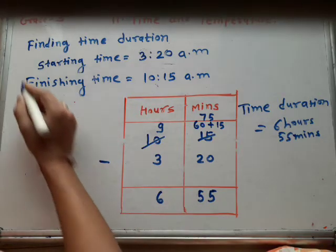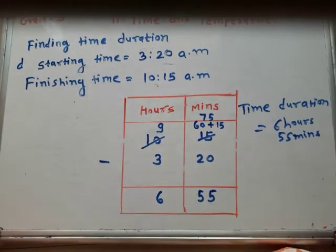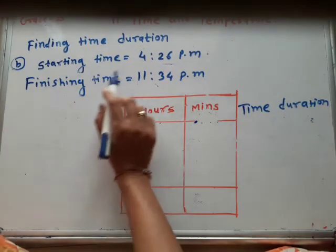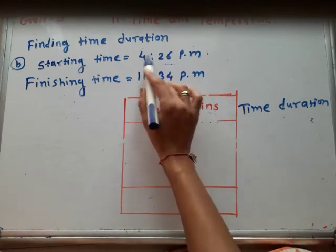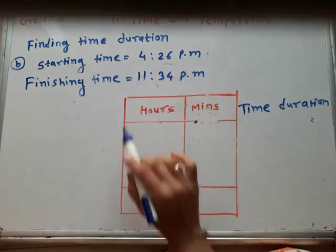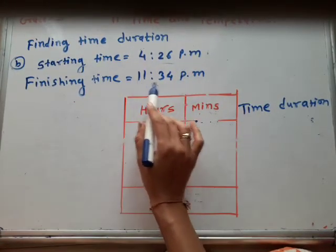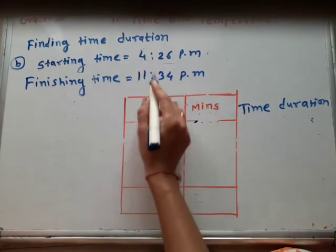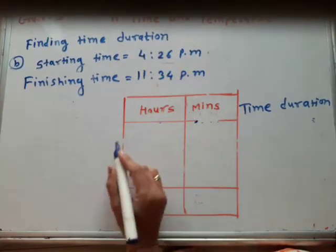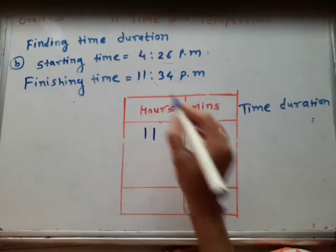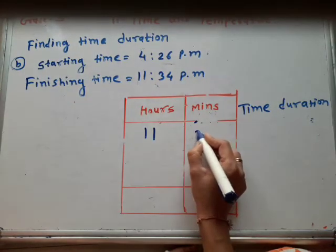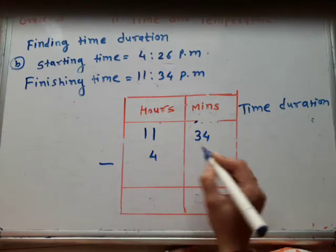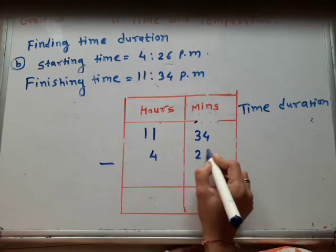Now the second number: starting time is 4:26 pm and finishing time is 11:34 pm. Again we subtract the starting time from finishing time. So we write the finishing time first: 11 hours, 34 minutes. Minus the starting time: 4 hours, 26 minutes.